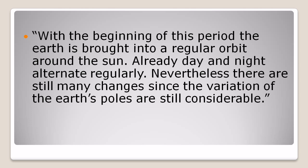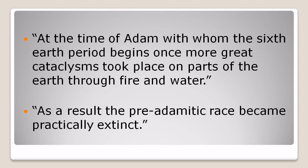With the beginning of this period the earth is brought into a regular orbit around the sun. Already day and night alternate regularly. Nevertheless there are still many changes since the variation of the earth poles are still considerable. At the time of Adam, with whom the sixth earth period begins, once more great cataclysms took place on parts of the earth through fire and water, and as a result the pre-Adamic race became practically extinct.